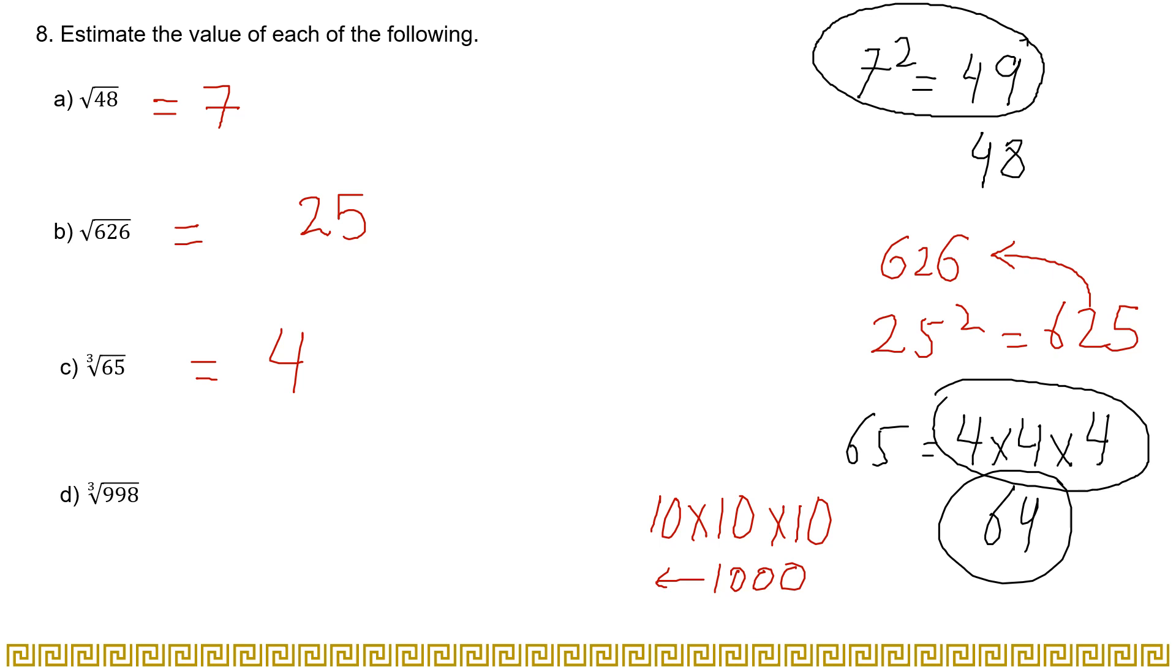If you take some other number, that will give you a value that is either too far or not nearer but too far from that value. So that is the reason you are taking values that are much nearer to the number that is given in the question. So in this case that will be 10, because it is just two numbers away from 1000, right? So you will write it as 10. The estimated value for cube root of 998 is 10.